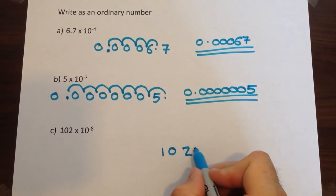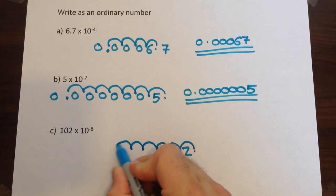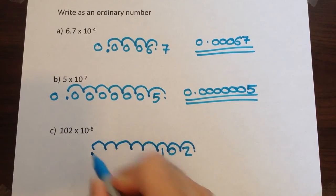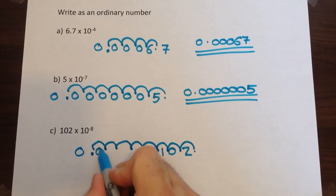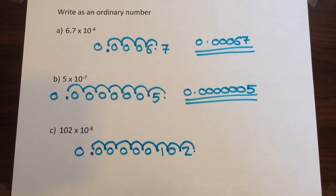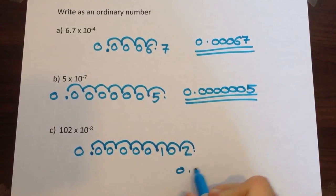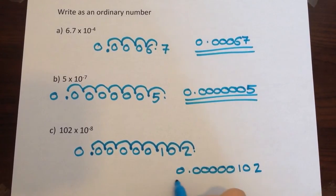So one, two, three, four, five, six, seven, eight. Decimal point ends up there. Zero on the start, one, two, three, four, five gaps to fill in. And rewrite your correct answer as 0.00000102.